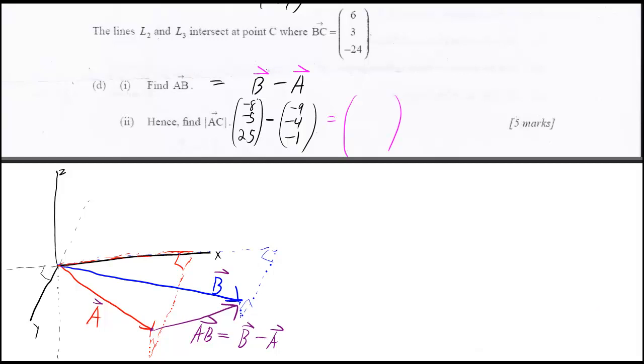So for AB, you have to do vector B minus vector A. B was previously given to us and A was what we figured out in one of the other problems. If you plug in B minus A, you get negative 8 minus negative 9, which is negative 8 plus 9, which is 1. Negative 5 plus 4 is negative 1. And 25 minus negative 1, so 25 plus 1, is 26. So that gives us vector AB.